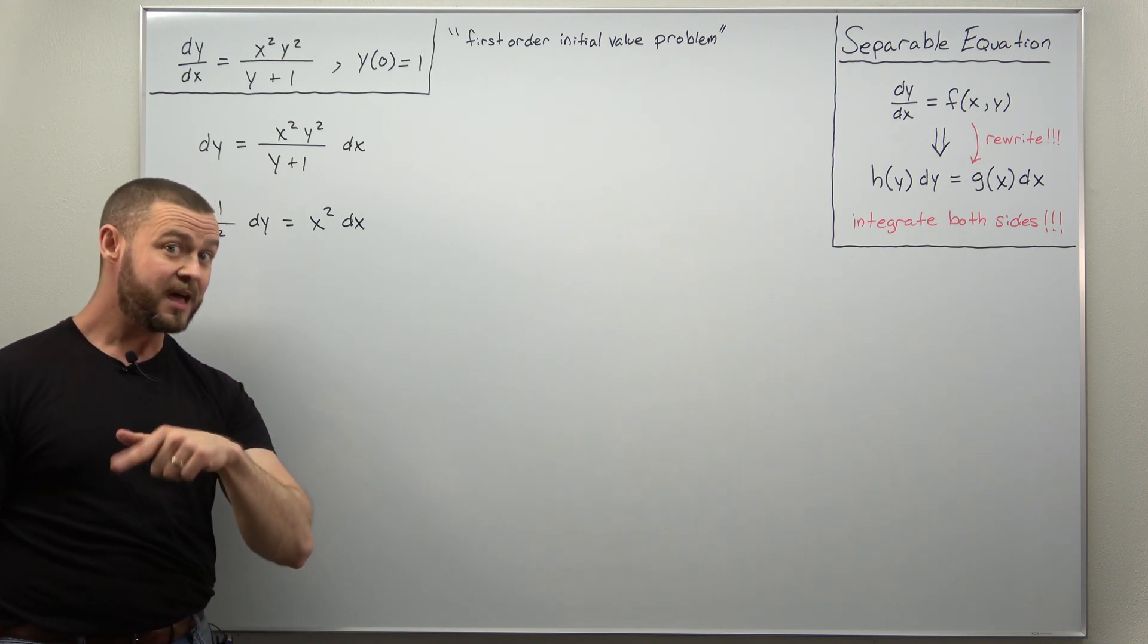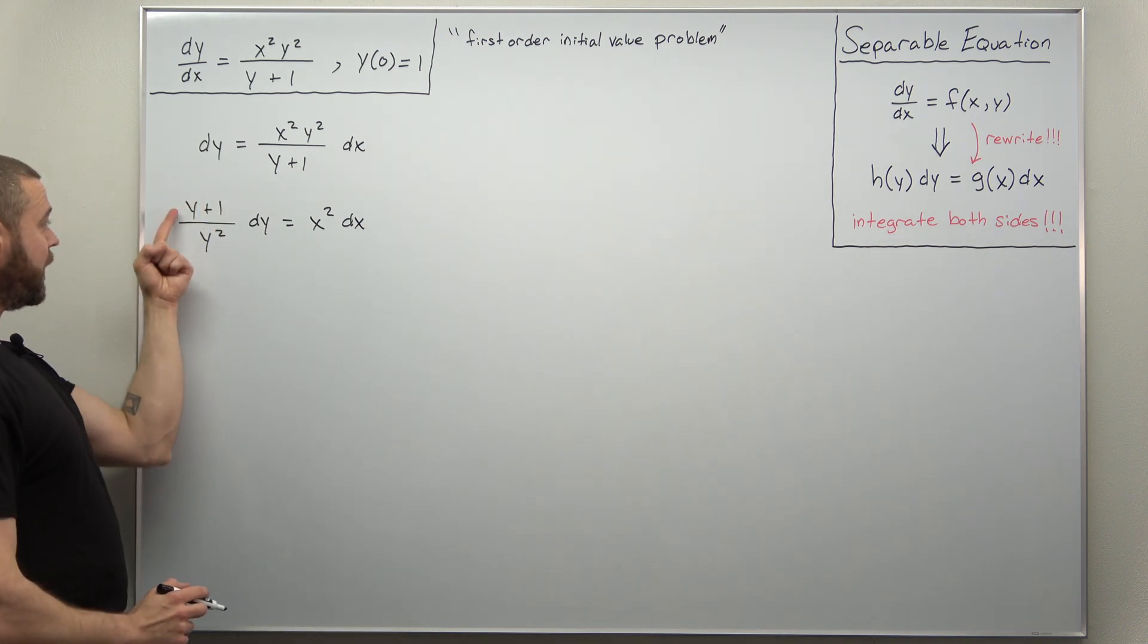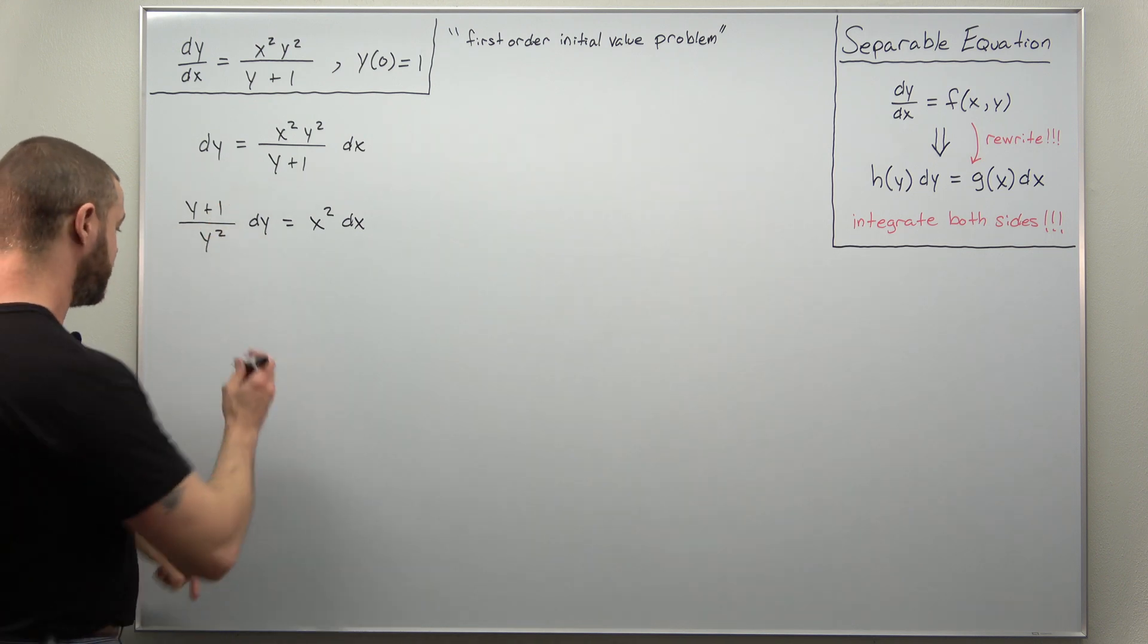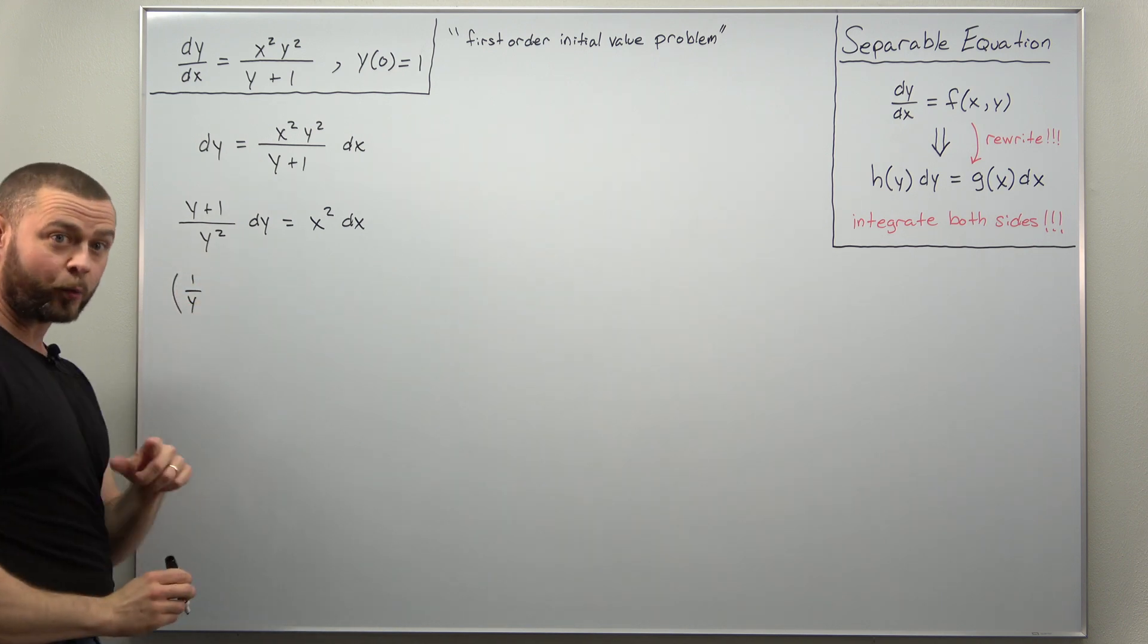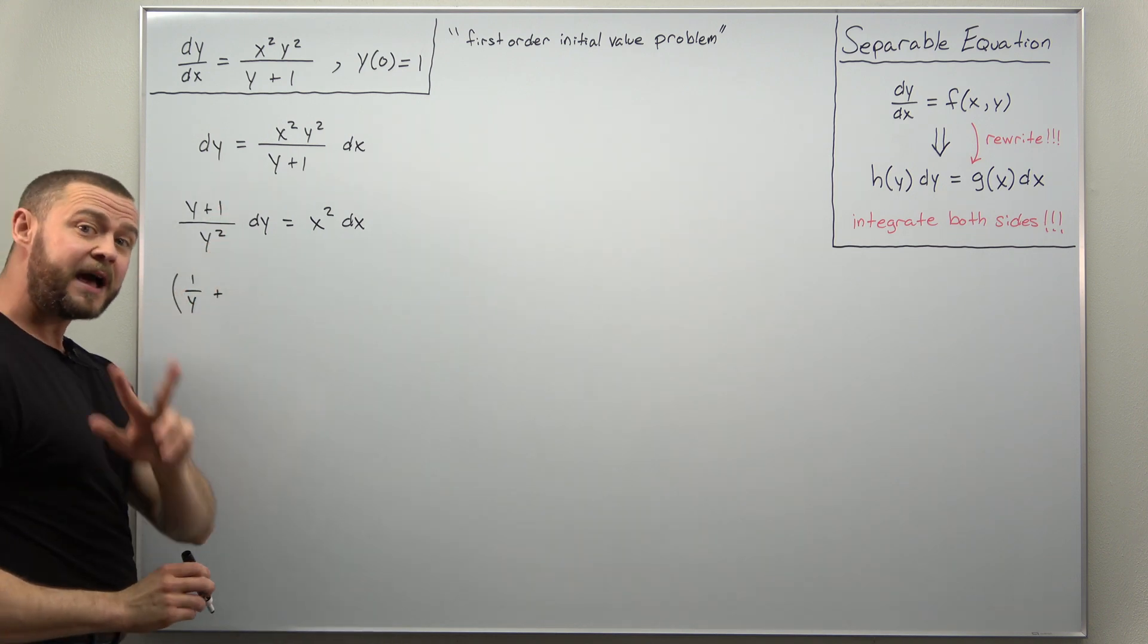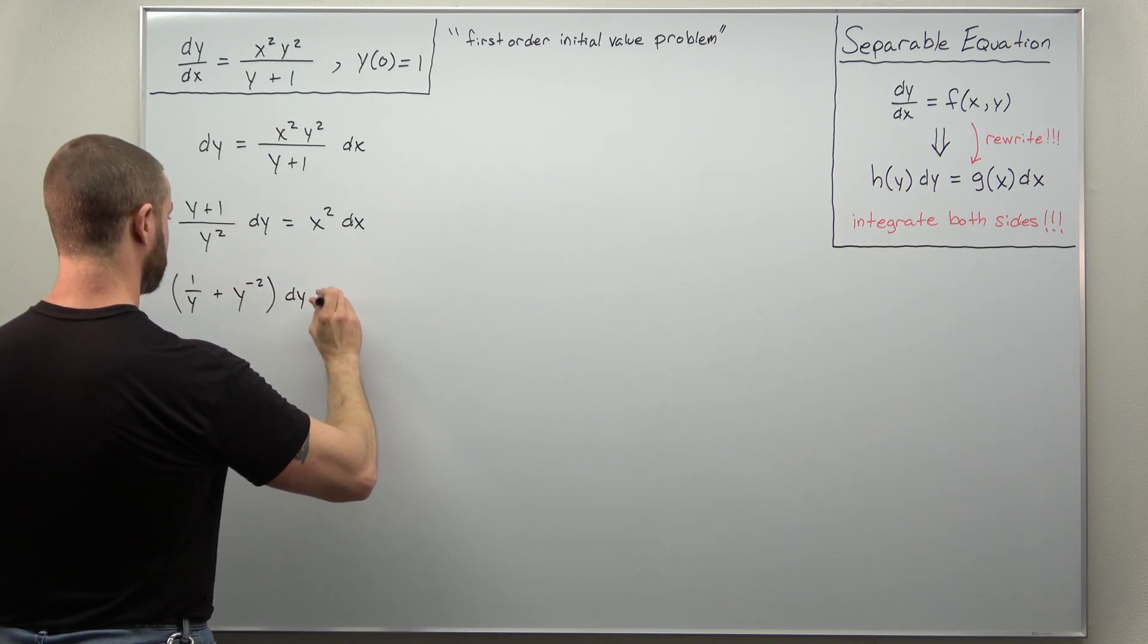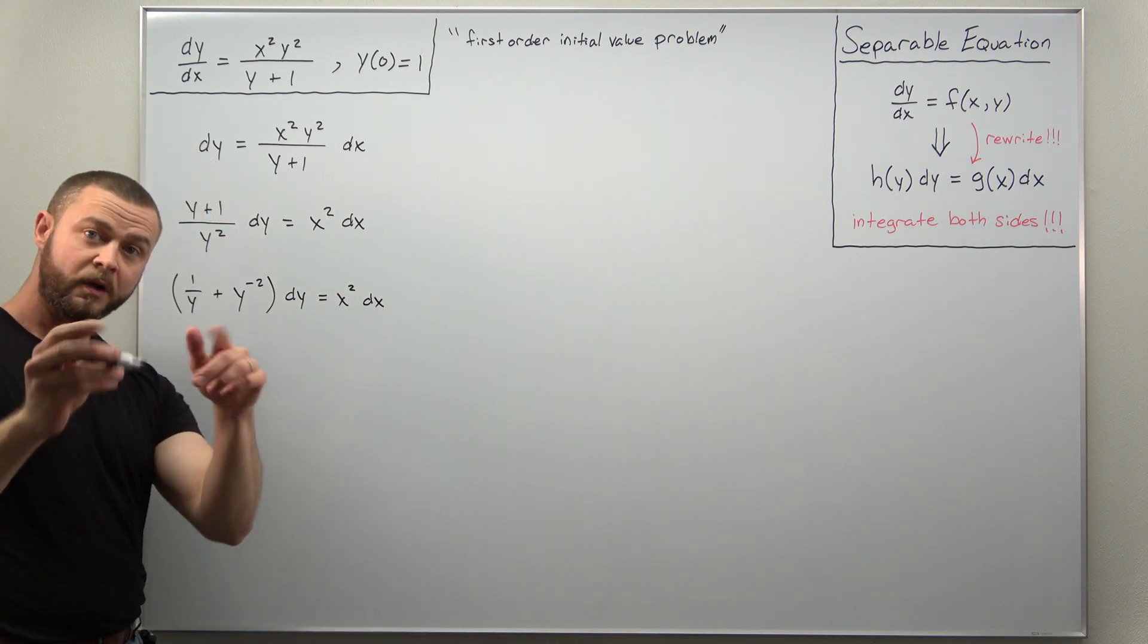Now to make some of the integrations a little bit easier, notice here I can divide y by y squared and then one by y squared. And if we do that, I'm going to write this side as one over y, one factor of y cancels out. And then here one divided by y squared to integrate that, let me write that as y to the negative two. And we're going to keep the right side the same as x squared dx.